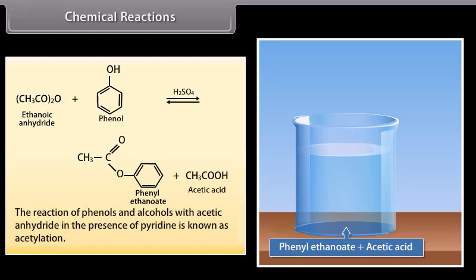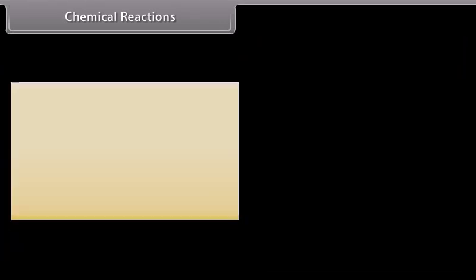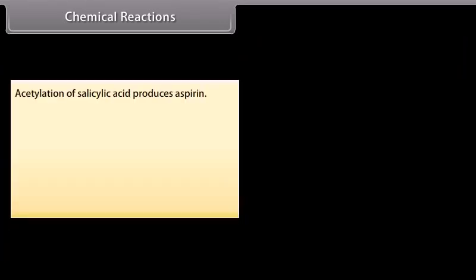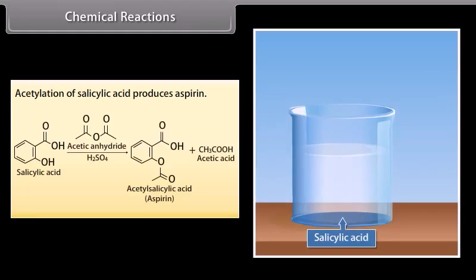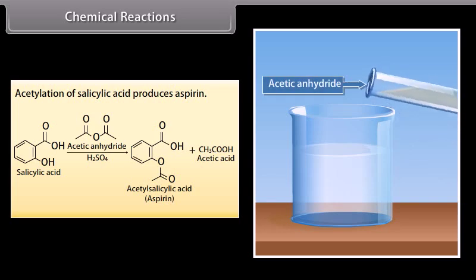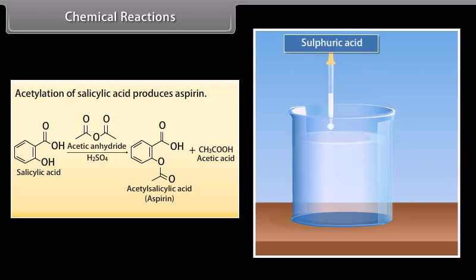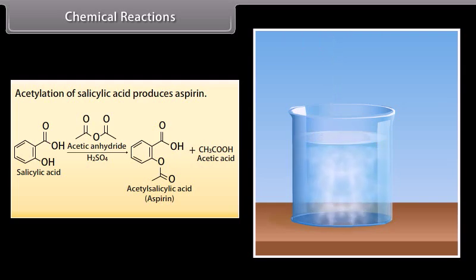Ethanoic anhydride reacts with phenol in the presence of sulfuric acid to form phenyl ethanoate and acetic acid. The reaction of phenols and alcohols with acetic anhydride in the presence of pyridine is known as acetylation. Acetylation of salicylic acid produces aspirin: acetic anhydride reacts with salicylic acid in the presence of sulfuric acid to form acetyl salicylic acid, or aspirin, and acetic acid.